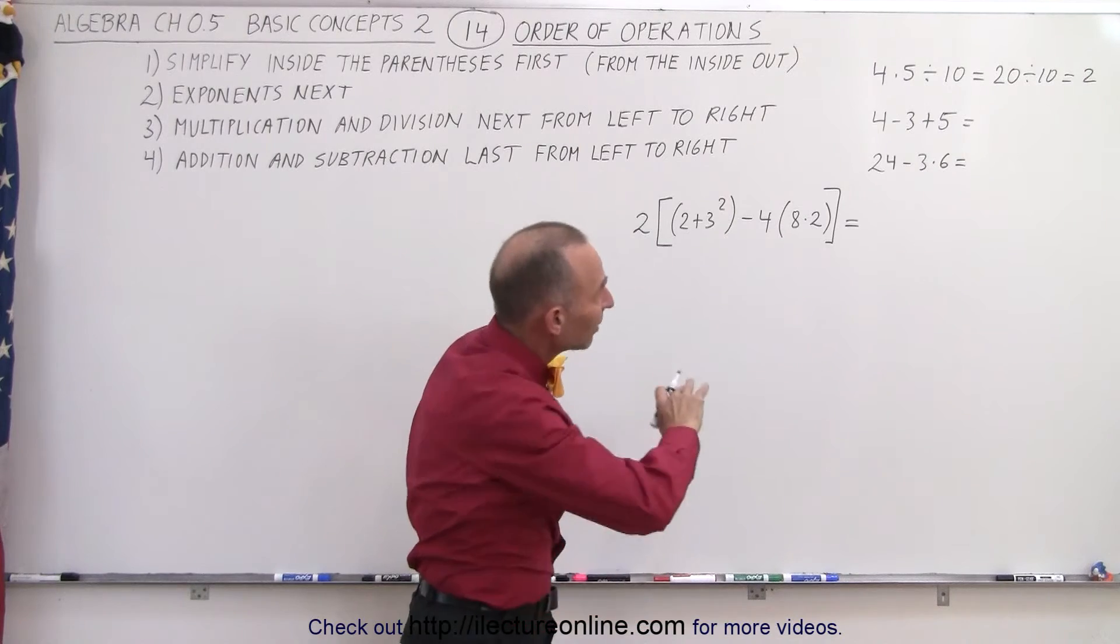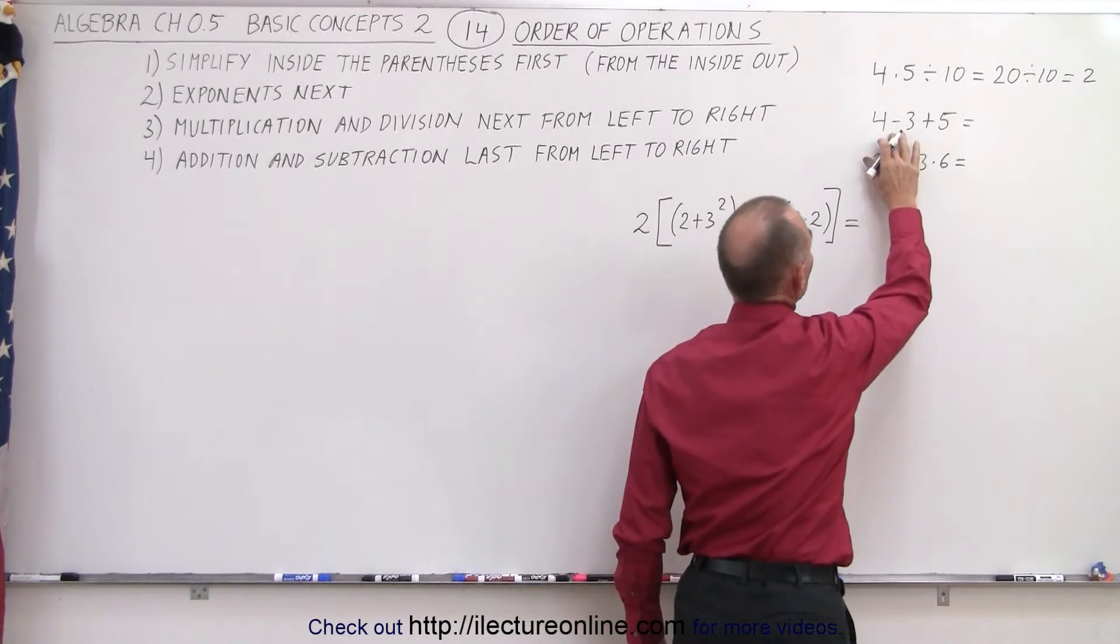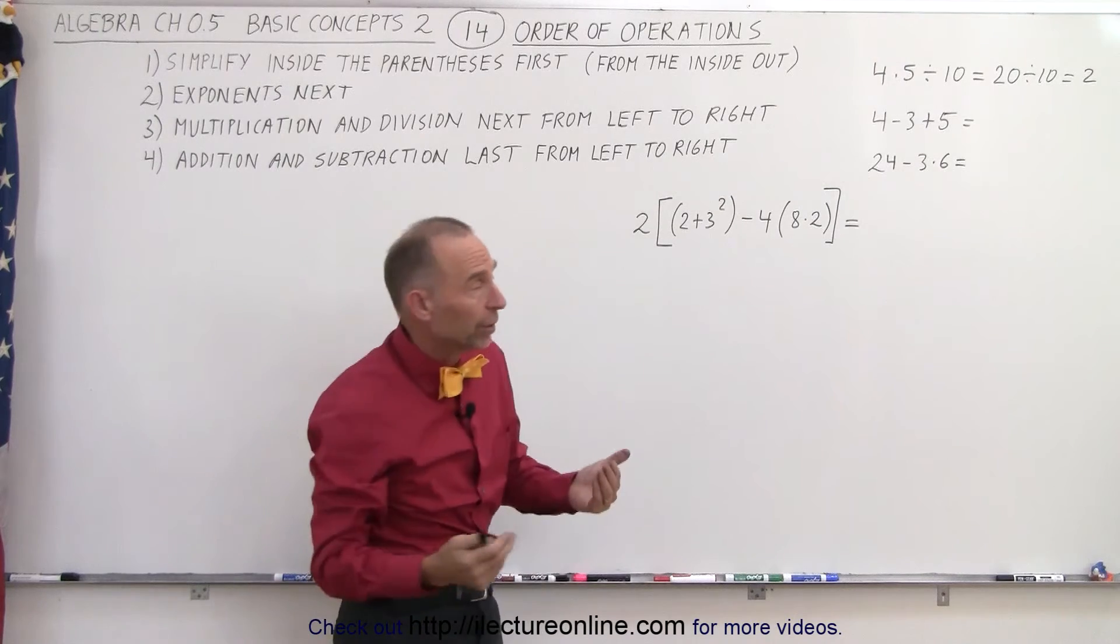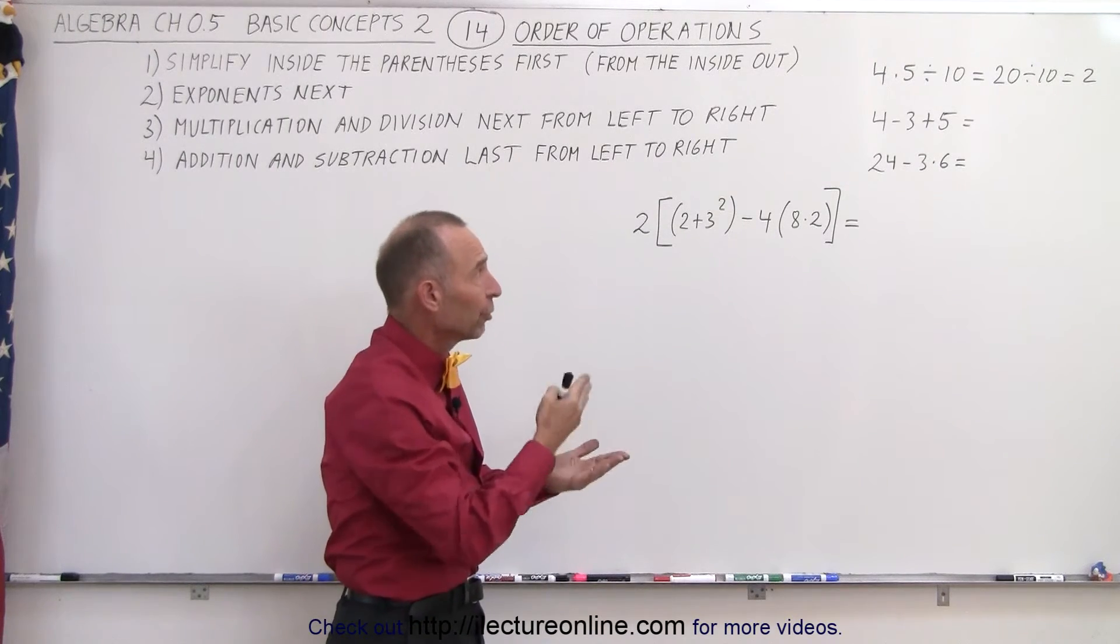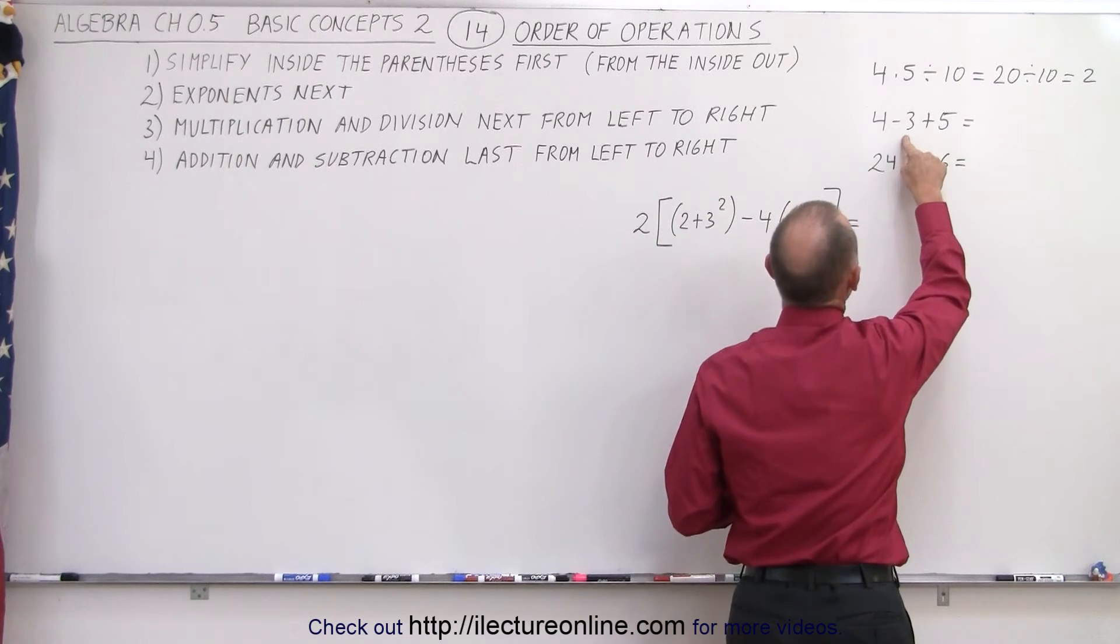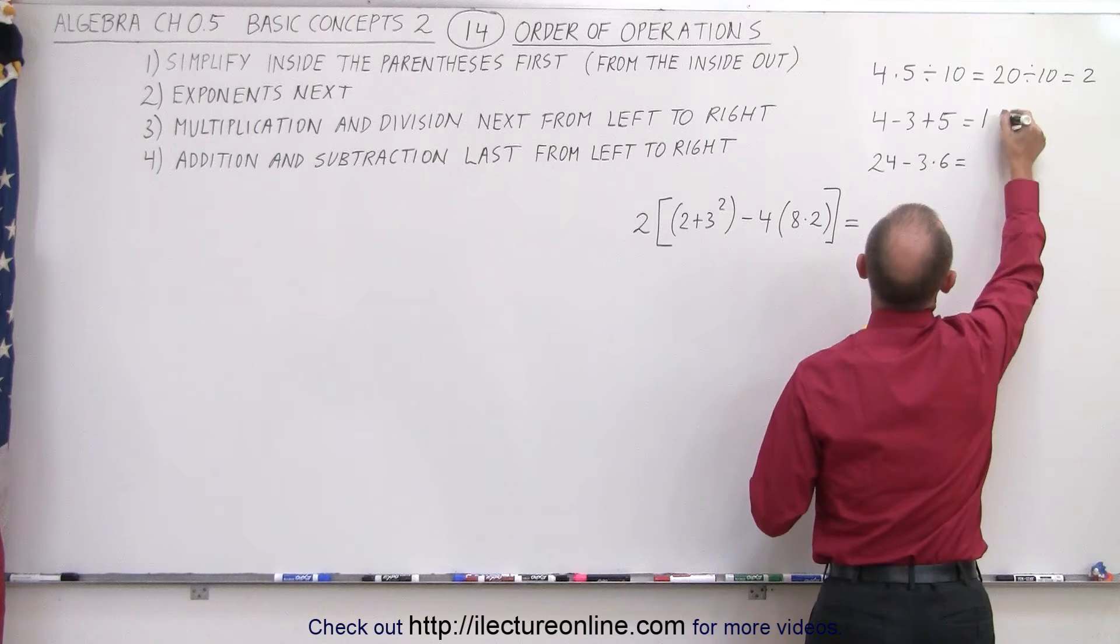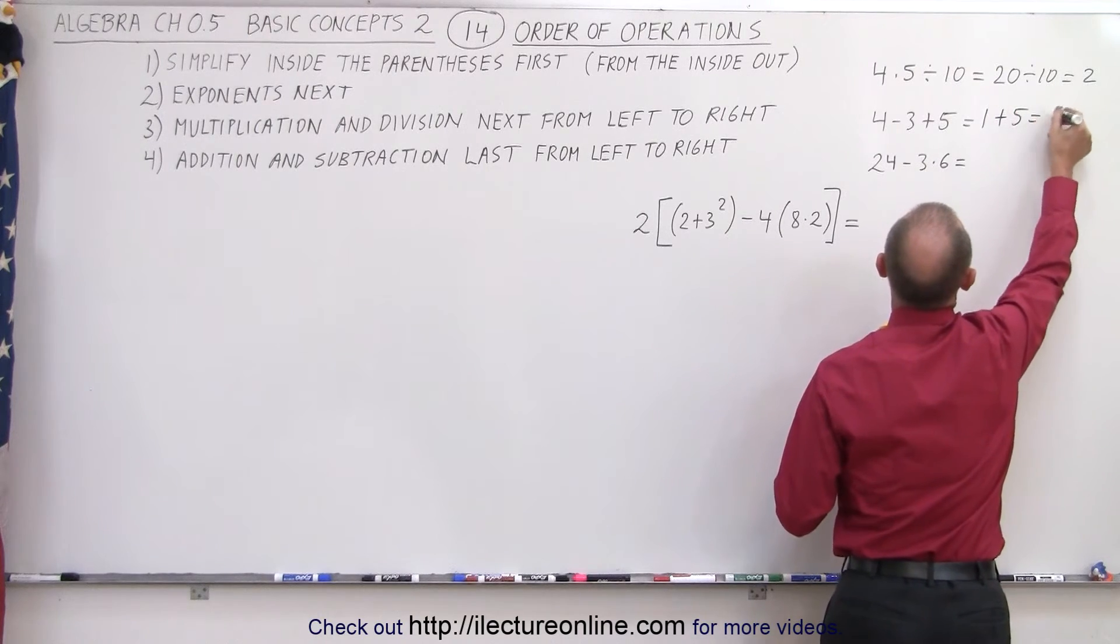Next, on the next exercise, we have a subtraction and an addition. And again, they have equal priority, and therefore we work from the left to the right. So we first go 4 minus 3, and then we add 5 to that. So 4 minus 3 is 1, and then we add 5 to that, which gives us a 6.